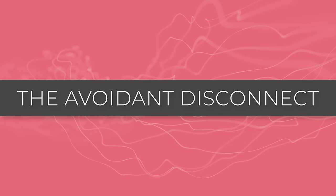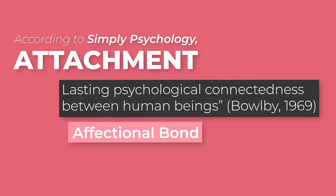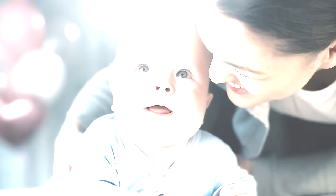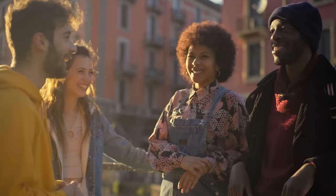Let's first look at the avoidant disconnect. When we refer to avoidants, we're talking about a category within attachment style theory. According to Simply Psychology, attachment theory is defined as a lasting psychological connectedness between human beings, founded by John Bowlby in 1969. It's often considered interchangeable with concepts such as affectional bond or emotional bond. A human being's first attachment is often established during infancy with a primary caregiver, like a mother or a father.